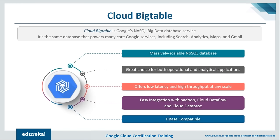Next we have Cloud Bigtable. Cloud Bigtable is Google's NoSQL big data database service — the same database that powers many core Google services including Search, Analytics, Maps, and Gmail. It provides a massively scalable NoSQL database suitable for low-latency and high-throughput workloads. It integrates easily with popular big data tools like Hadoop and Spark, and supports the open-source HBase API. Cloud Bigtable is a great choice for both operational and analytical applications including IoT, user analytics, and financial data analytics. It can scale to hundreds of petabytes automatically and handle millions of operations per second.